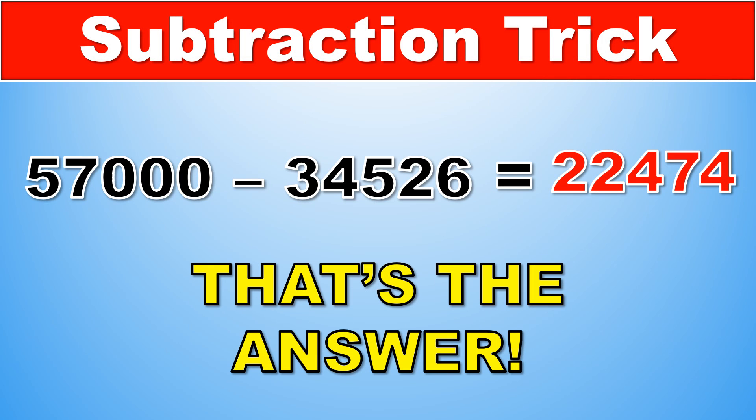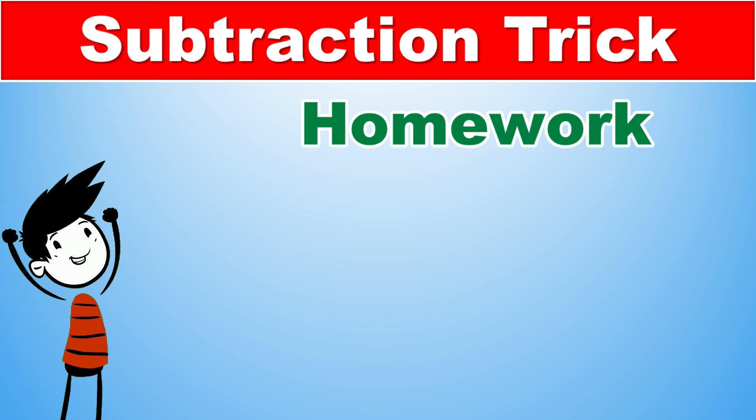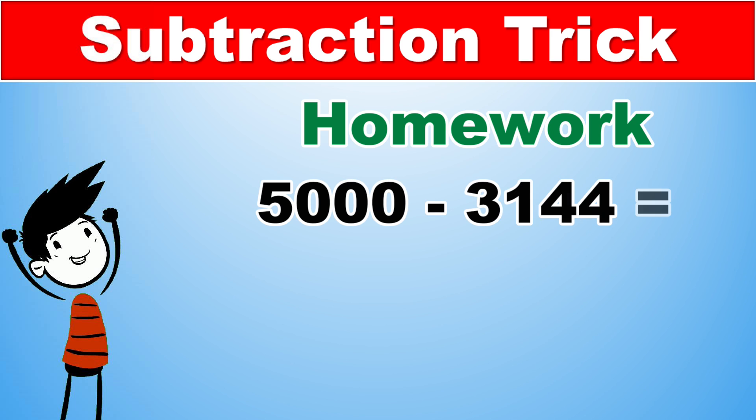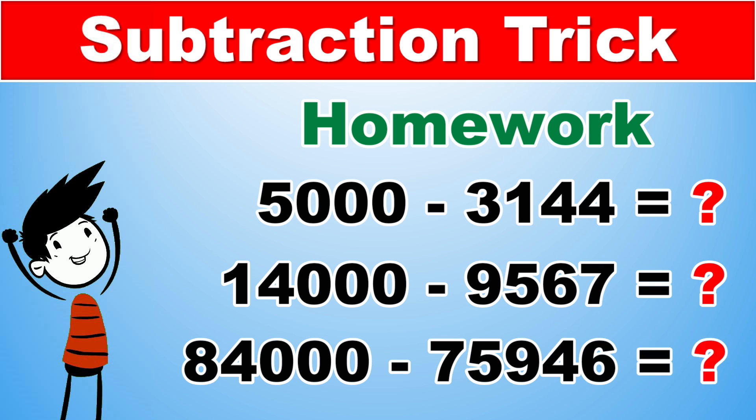Now that you know how to do this simple subtraction trick, it's time for your homework. Try to figure out what 5,000 minus 3,144 is, what 14,000 minus 9,567 is, and what 84,000 minus 75,946 is. Make sure to comment all your answers in the comment section below, and for your convenience, the correct answers to these questions will be in the description below.